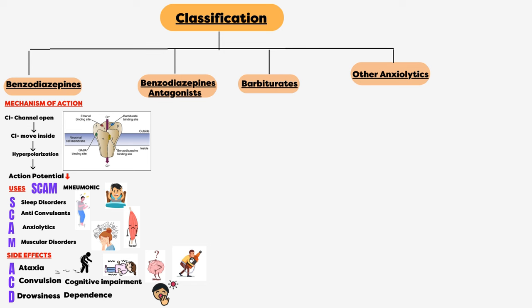We can manage the overdose of benzodiazepines by using benzodiazepine antagonist, that is flumazenil. Flumazenil also causes some side effects like vomiting, agitation, nausea, and dizziness. You can memorize it by the mnemonic VAN-D.